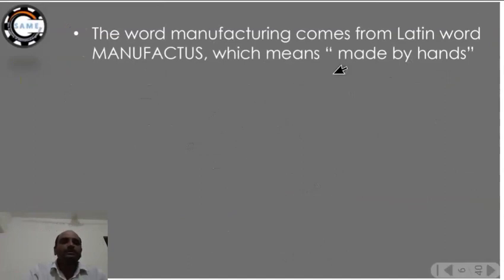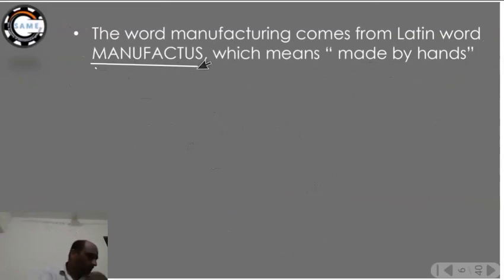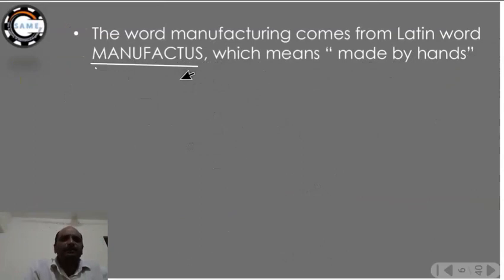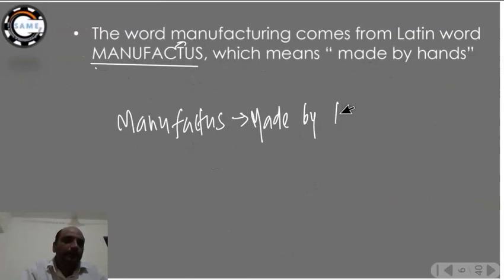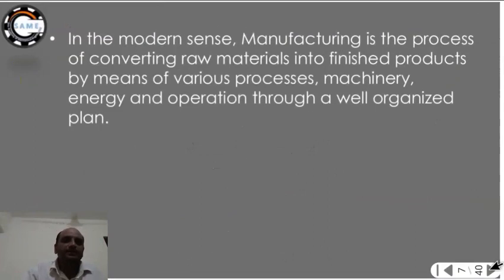The word 'manufacturing' comes from the Latin word 'manufactures', which means 'made by hands'. From this Latin word 'manufactures', the word manufacturing is derived. So originally, manufacturing meant making things by hand.